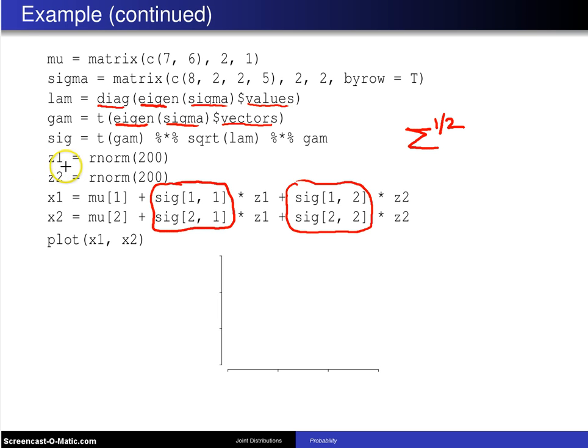So finally, if you set z1 to 200 independent standard normals, z2 to 200 other independent standard normals, this first step here will give you the X1 values. The second step will give you the X2 values and this is just plugging into the formula. Finally, when you plot them, they will be centered around and I will go ahead and put in some labels here.